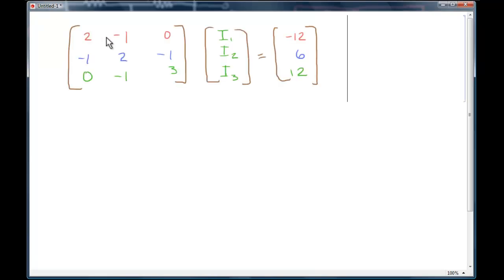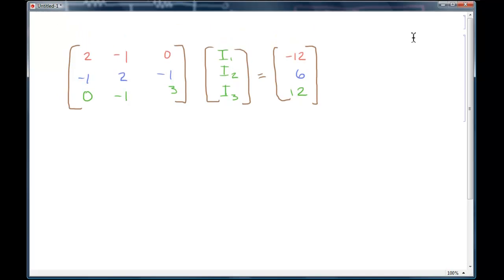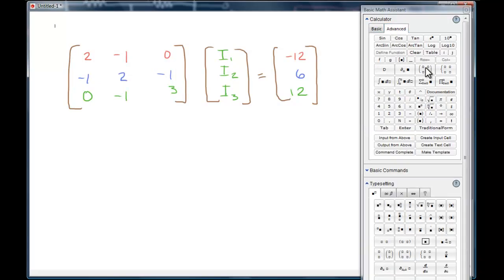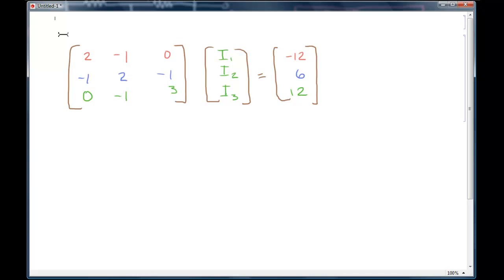When you're solving a system of equations in Mathematica, it's really easy to just create a matrix. There are two ways to do it. You can use the palette, which is up in the main menu of Mathematica here, and open up the Basic Math Assistant. It will show you under the Advanced tab how to create a matrix. There's a quicker way to do this. What I'm going to do is assign a variable. I'm going to create two parentheses like this. I'll use Control Comma to create columns. I'll do that twice. Then I'll use Control Enter to create the rows.